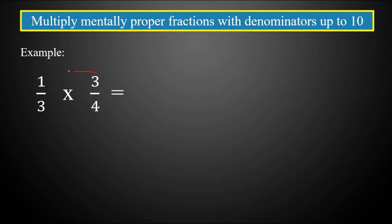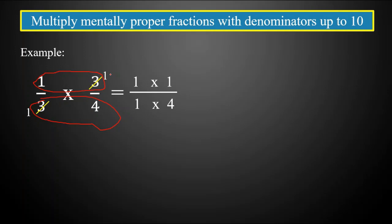Our numerators are one and three, and our denominators are three and four. We can use the cancellation method. The common number is three, so we cancel out the three in the numerator and the three in the denominator: three divided by three equals one. This reduces our fractions before we multiply. Our new numerators are one times one, and the denominators are one times four. One times one equals one, and one times four equals four. So one-third times three-fourths equals one-fourth.